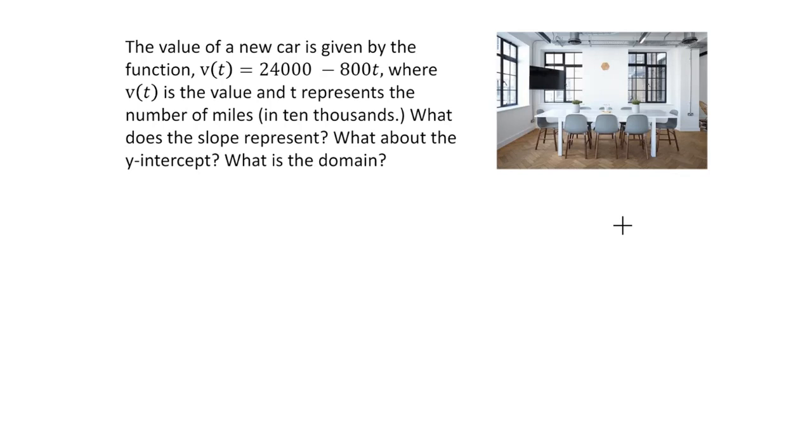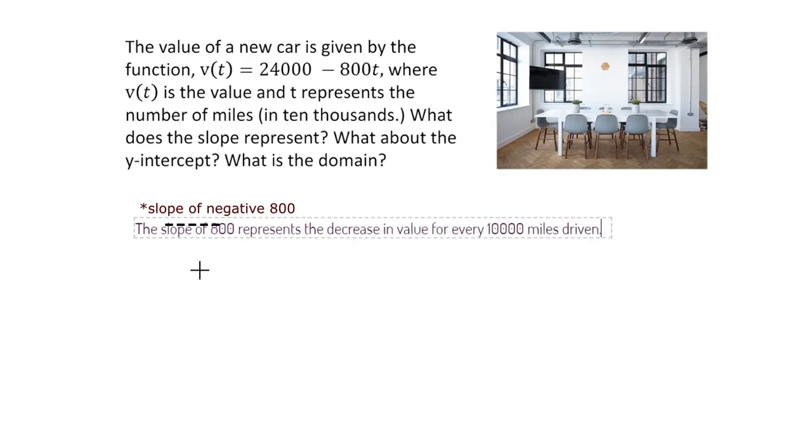Hopefully, you gave this one a shot. Again, they're also already giving us the function that represents the value of a new car based on time t, where t is the number of miles represented in units of 10,000. v is just the value of the car. So if you look, if you see what the slope represents, t is the number of miles. Every single time the number of 10,000s increases by one, the value of our car decreases by 800. So if you notice in this case, for every 10,000 miles that we drive, our car is depreciating in value by 800. That's exactly what that 800 represents. That 800 represents the decrease in value for every 10,000 miles driven.